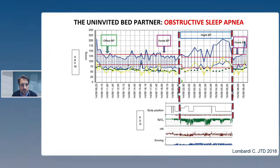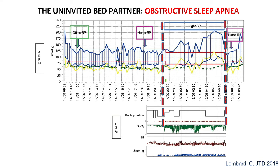When we run a 24-hour blood pressure tape in a patient with hypertension and sleep-disordered breathing, we often see an altered nocturnal blood pressure pattern — a rising pattern where blood pressure goes up and does not dip at night by 10% as we would normally see. This pattern is very typical in patients with sleep-disordered breathing. These cycles of oxygen desaturation and arousals from sleep can raise blood pressure, causing nocturnal hypertension and a rising blood pressure pattern.